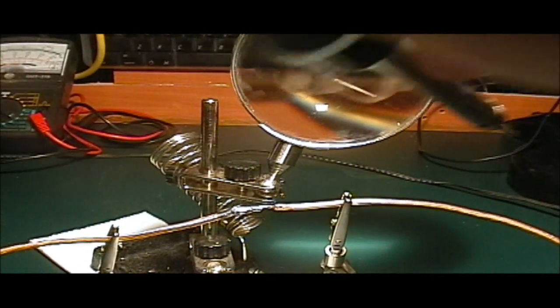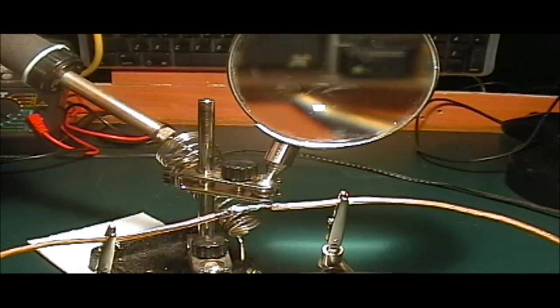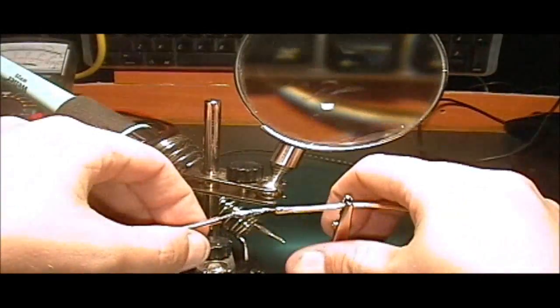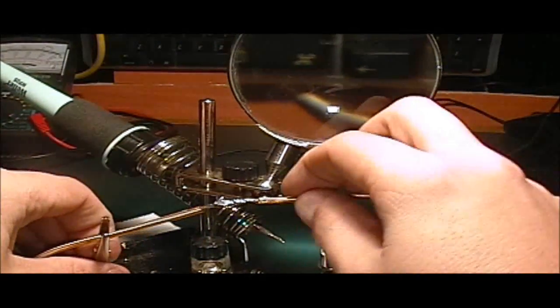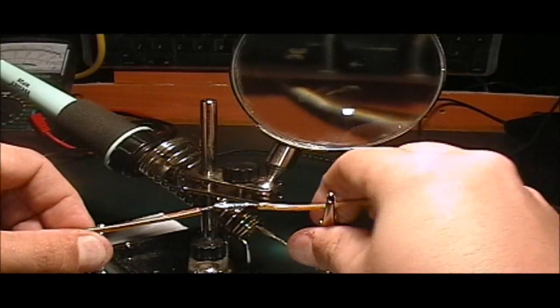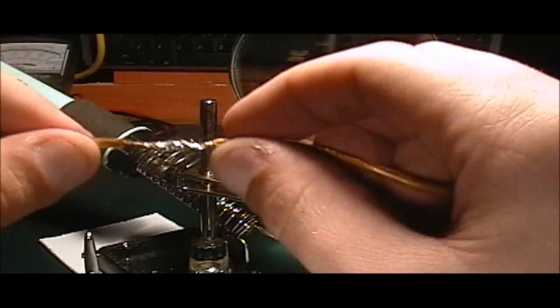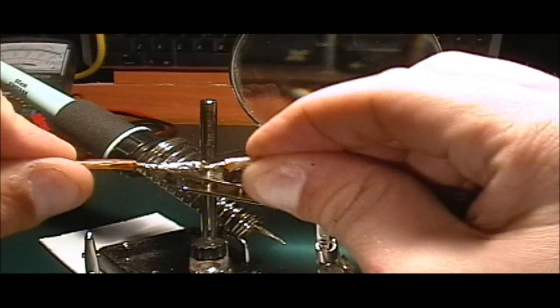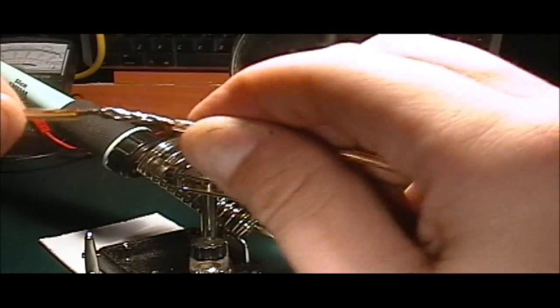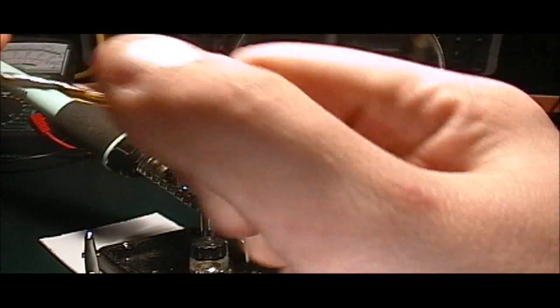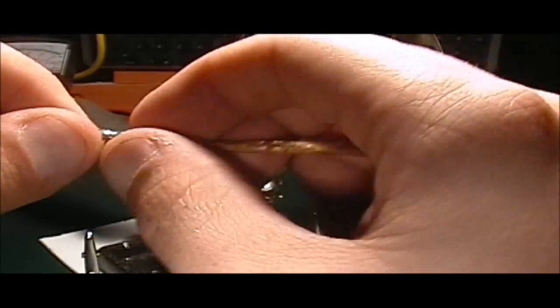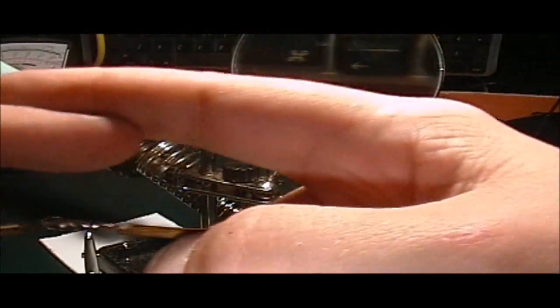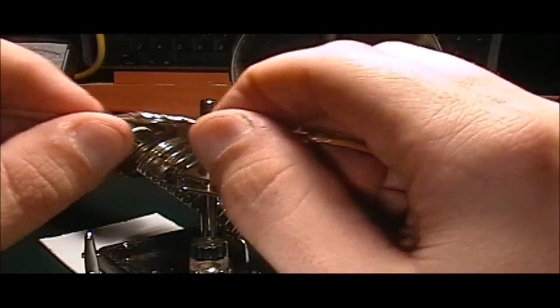But that's basically how you solder wires together. Now, solder, although it does help create some rigidity, do not use solder as a load-bearing device. Now, granted, that's pretty strong. But if you were to just take the two wires and touch them like this and solder them together, it would break apart very easily.